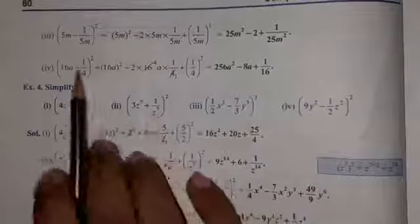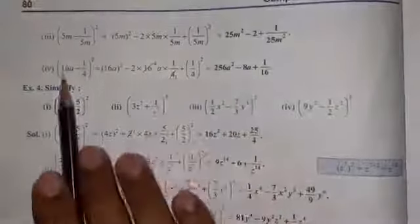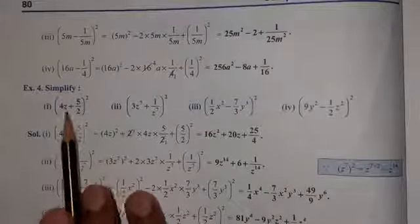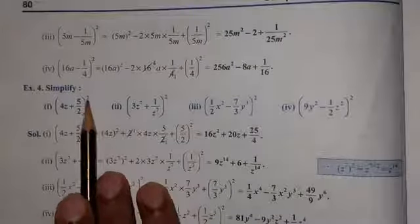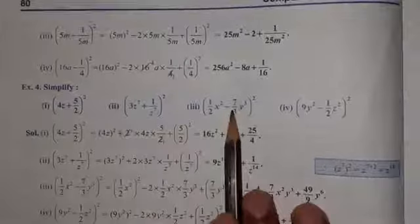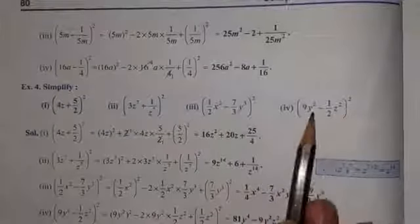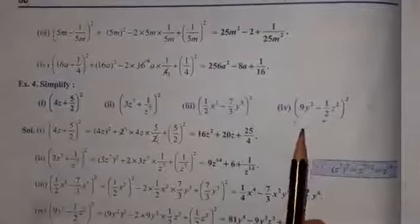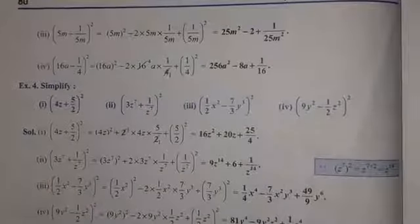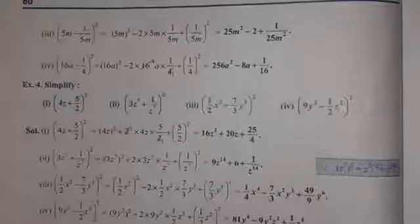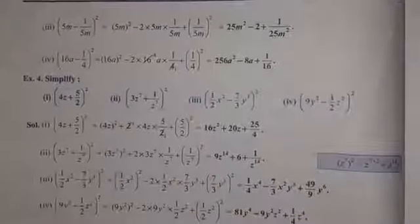Same examples are given on the next page, so I am not going to describe those. Example 4 is simplify — again square of the binomial, again square of the binomial. Terms are changed and a little bit tough. تھوڑے سے tough terms کر دیئے گئے ہیں لیکن ان کو بھی rule کے according ہی آپ solve کریں گے، تو آپ example 4 بھی بڑے آرام سے سمجھ جائیں گے۔